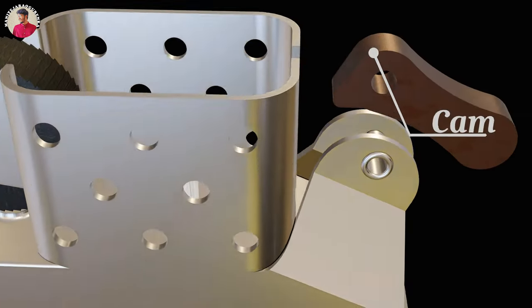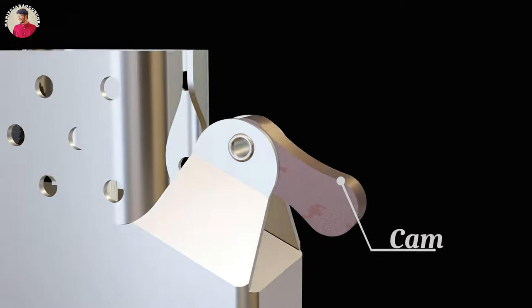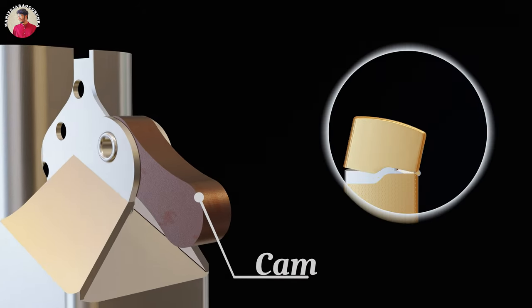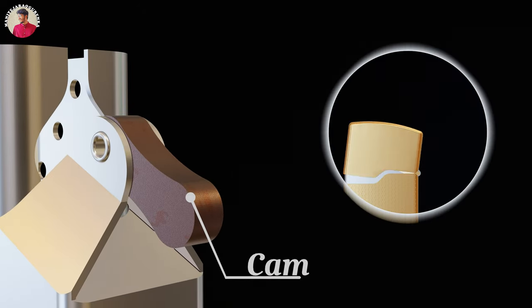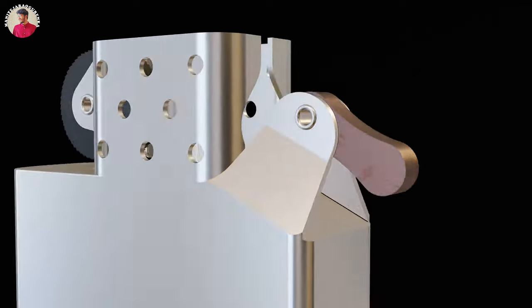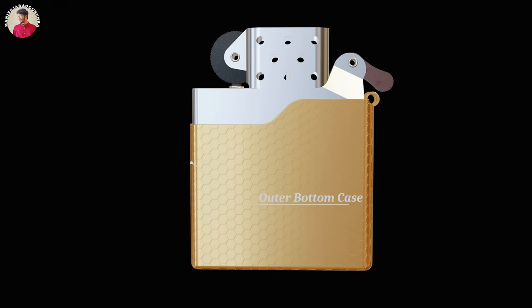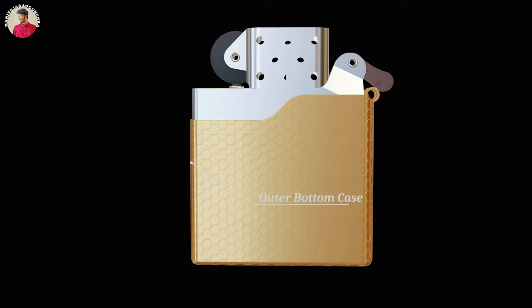A cam is fixed to the main case with a cam rivet. This cam helps in closing and opening the lid securely. And finally, the outermost part. The bottom case is strongly fixed from the bottom to hold the complete setup.